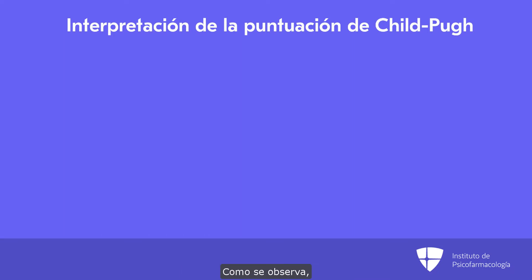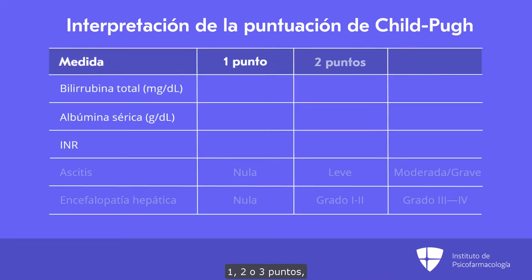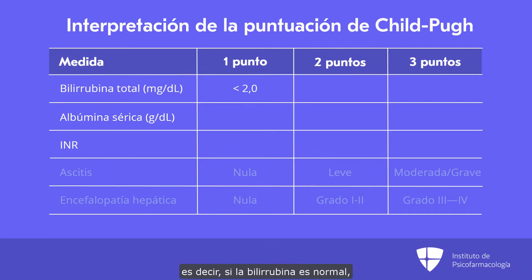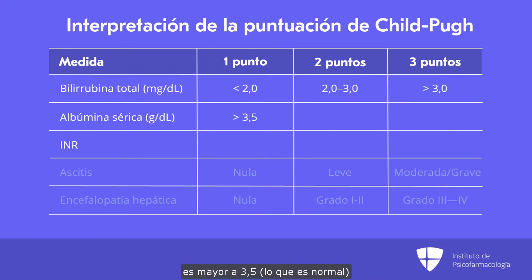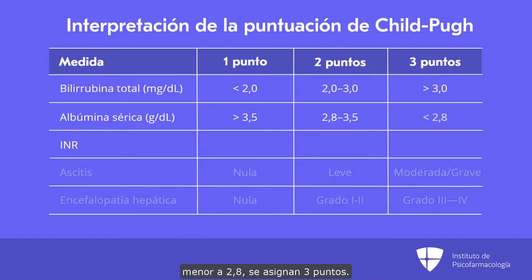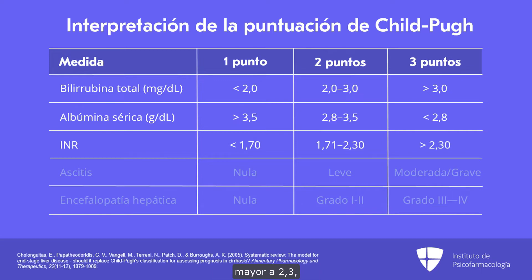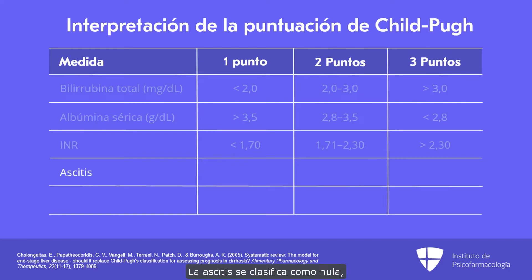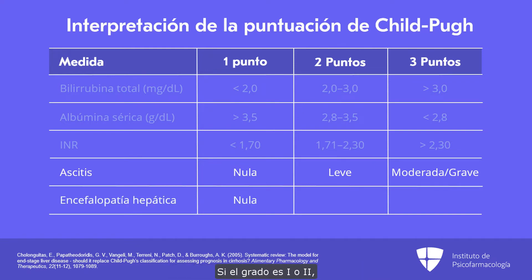Here is the scoring system. For each of the five elements, one, two, or three points are given depending on severity. For total bilirubin: less than 2 gets one point, 2 to 3 gets two points, and greater than 3 gets three points. Serum albumin greater than 3.5 gets one point, 2.8 to 3.5 gets two points, and less than 2.8 gets three points. INR less than 1.7 gets one point, 1.71 to 2.30 gets two points, and greater than 2.3 gets three points. Ascites is graded as none, mild, or severe — one, two, or three points. Hepatic encephalopathy: none gets one point, grade 1 to 2 gets two points, and grades 3 and 4 get three points.